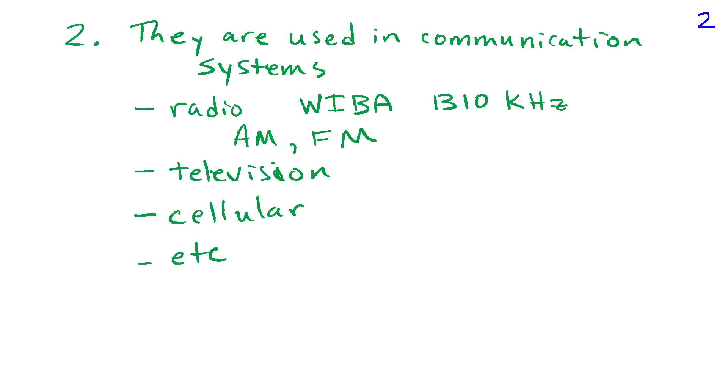Similarly with television, it broadcasts, each station broadcasts on a specific frequency. Your cellular communications with your phone works the same way. And almost any communication system is based on signals. So they occur in man-made systems as well as occurring in nature.